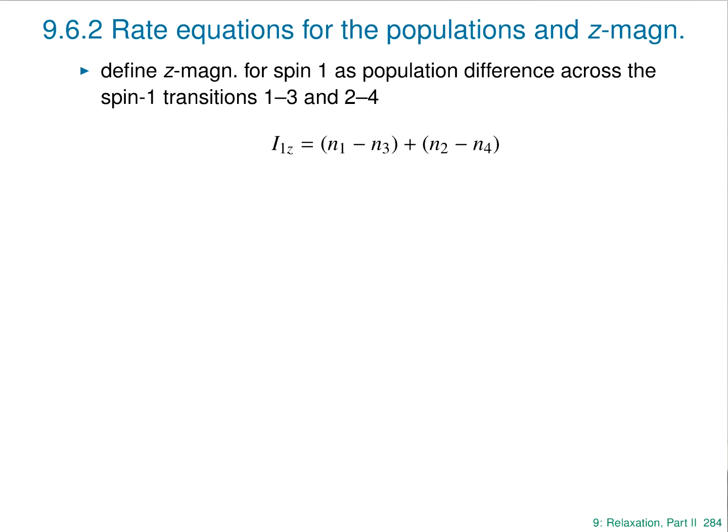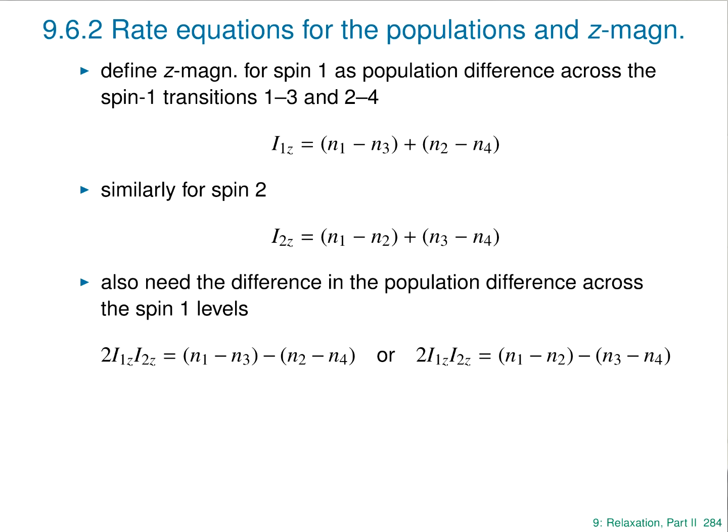Similarly, the Z magnetization on spin 2, I2Z, is (N1 − N2) + (N3 − N4). You also need one more term — a difference term written as 2I1Z·I2Z, which is the difference of the population across the spin-1 levels, or equivalently across the spin-2 levels. When we were talking about product operators, I described 2I1Z·I2Z as a non-equilibrium population distribution — and that's exactly what it is, corresponding to this population difference.